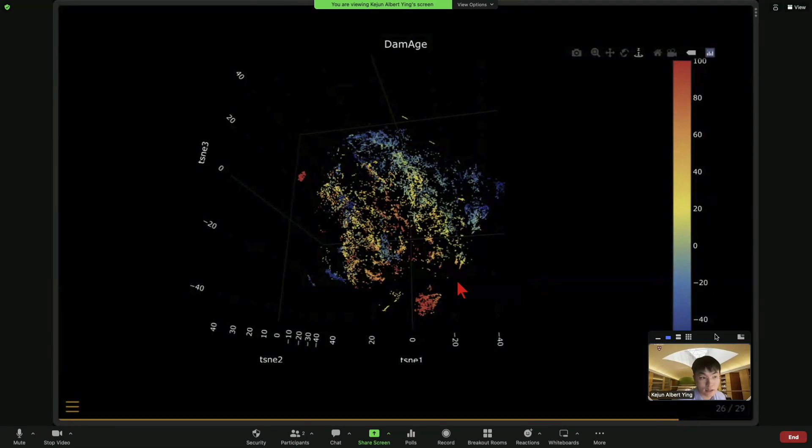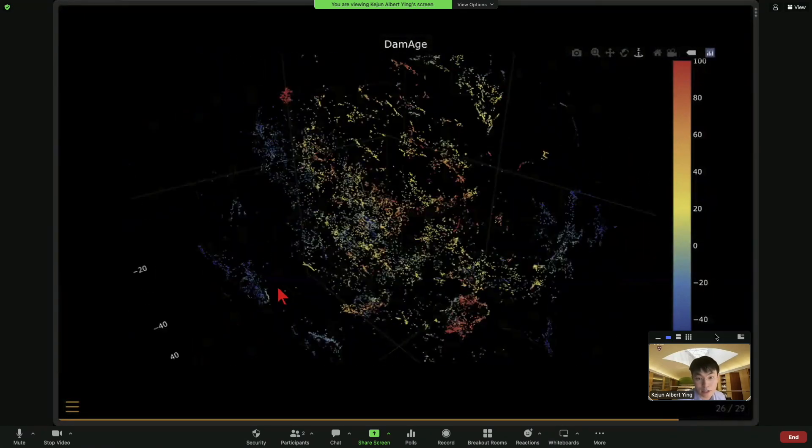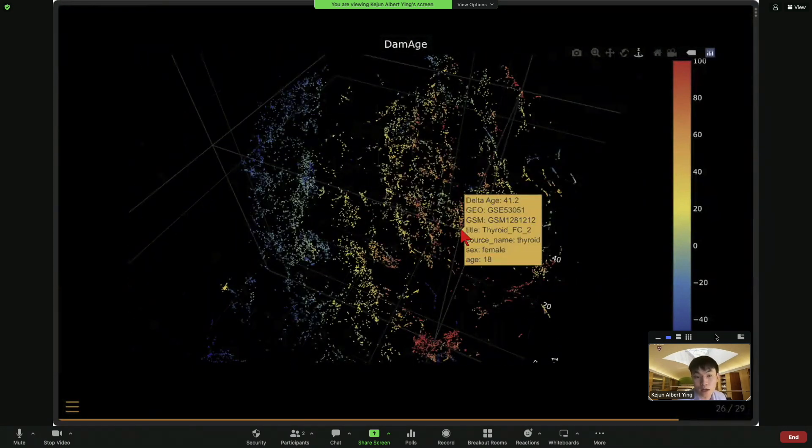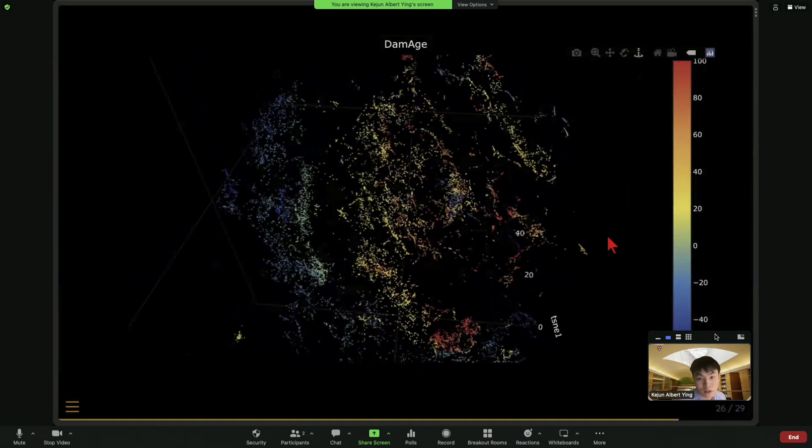And you can also even look at the epigenetic age acceleration. So here again, each dot is a sample and the color represents the age acceleration term. So the red samples are epigenetically older and blue samples are epigenetically younger.